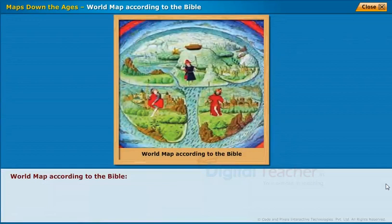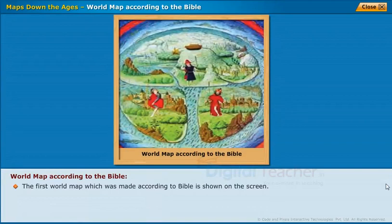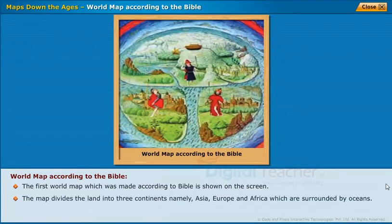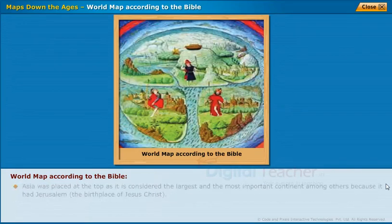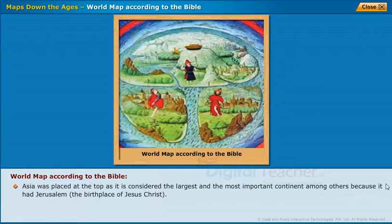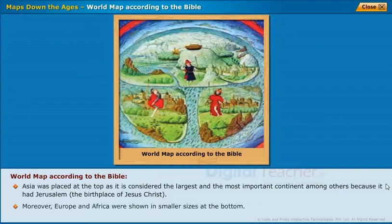World Map According to the Bible. The first world map made according to the Bible divides the land into three continents: Asia, Europe, and Africa, which are surrounded by oceans. Asia was placed at the top as it is considered the largest and most important continent, because it had Jerusalem, the birthplace of Jesus Christ. Europe and Africa were shown in smaller sizes at the bottom.